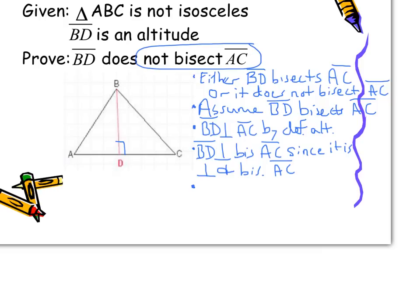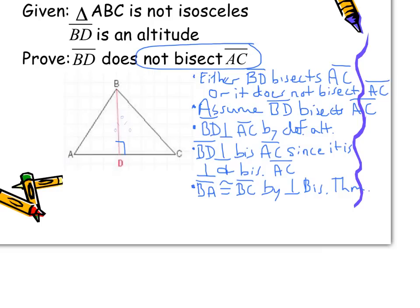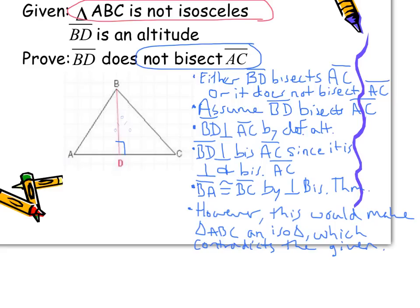So that would mean that AB and BC are congruent, because B is on that perpendicular bisector and therefore B is equidistant to both A and C. However, if those two segments are congruent, doesn't that contradict the given where it says that ABC is not isosceles? Because if those two segments are congruent, that makes it an isosceles triangle — there's our contradiction. So we write: however, this would make triangle ABC an isosceles triangle, which contradicts the given. So our assumption is false. Therefore, BD does not bisect AC.